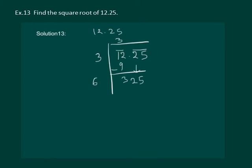We get 6 and put a decimal. Now also we have to put a blank. Clearly 5 will give us 325 and remainder 0. Hence, square root of 12.25 is equal to 3.5.